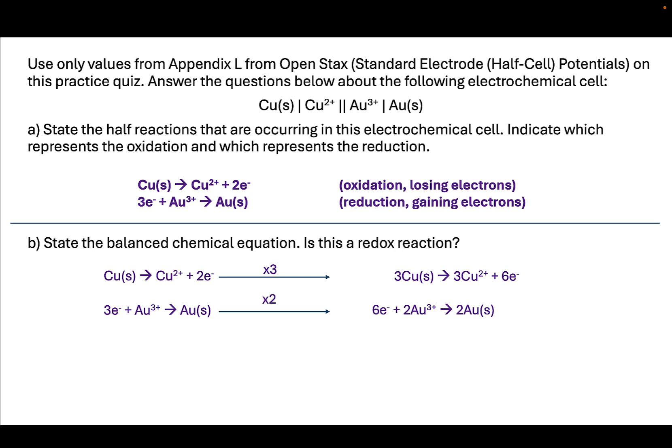We do this in order to get a common number of electrons on the product side of the oxidation and on the reactant side of the reduction. So when we add together, we're going to cancel the electrons out and give us the following.